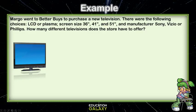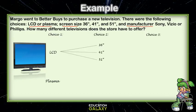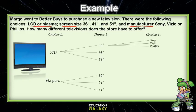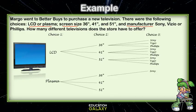First we want to see how many choices she has. Choice one: LCD or Plasma. Choice two: screen size. Choice three: manufacturer — that's three choices. So if she chose LCD, she may choose 36, 41, or 51 inches. If she chose Plasma, her choices are again 36, 41, or 51. Then she has to choose the manufacturer. An LCD 36-inch comes in Sony, Vizio, or Philips. Same with the 41-inch and the 51-inch, and again with all the Plasma choices.